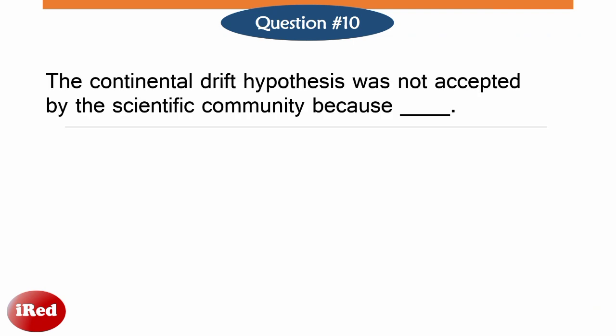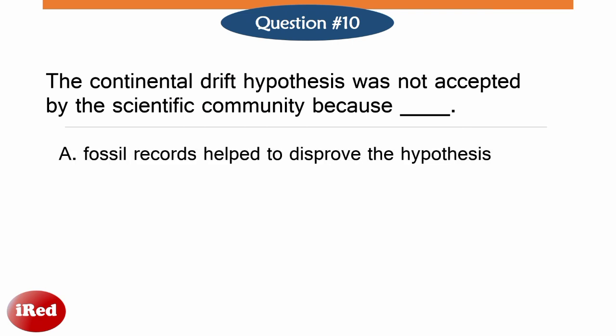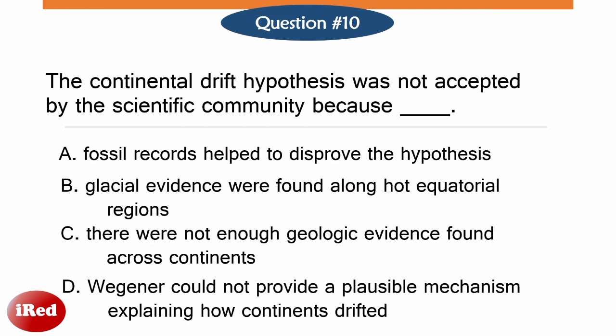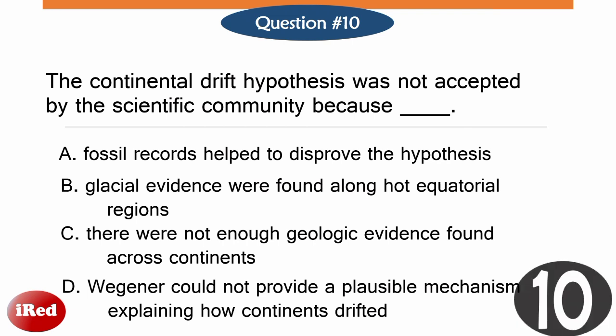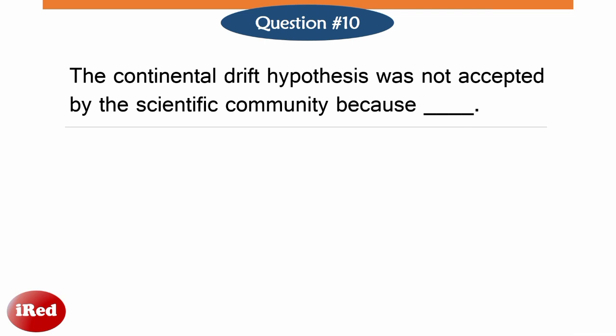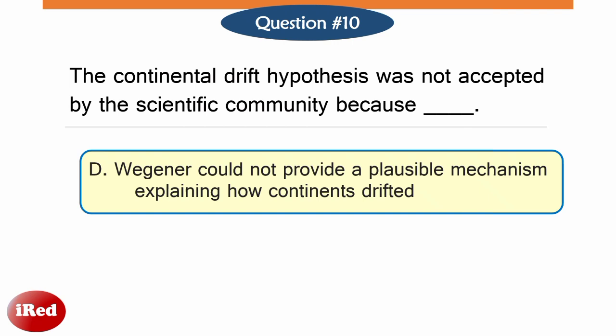The continental drift hypothesis was not accepted by the scientific community because: Letter A — fossil records helped to disprove the hypothesis. Letter B — glacial evidence were found along hot equatorial regions. Letter C — there were not enough geological evidence found across continents. Or letter D — Wegener could not provide a plausible mechanism explaining how continents drifted. The correct answer is letter D.